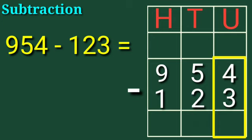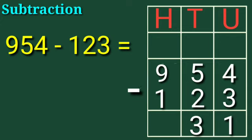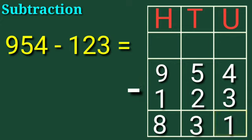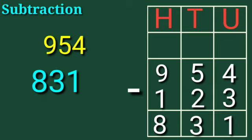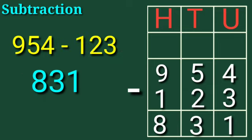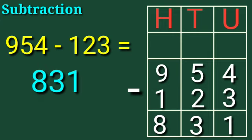4 minus 3 is equal to 1. 5 minus 2 is equal to 3. 9 minus 1 is equal to 8. 1 is under the units column, 3 is under the tens column, and 8 is under the hundreds column — that is the number 831. So children, 954 minus 123 is equal to 831.